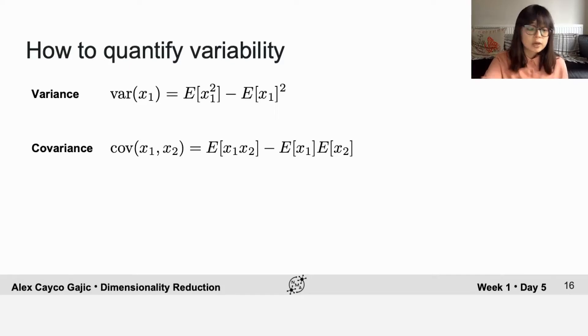And notice that if you plug in the covariance of x1 and x1, then you recover the usual equation for variance that we know and love.